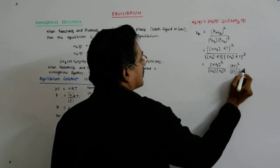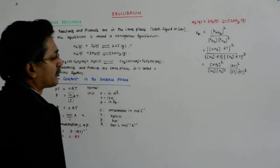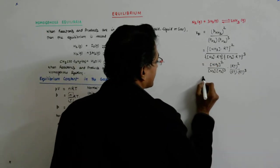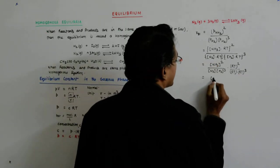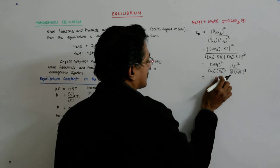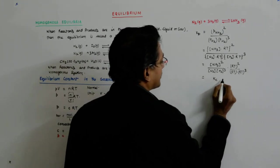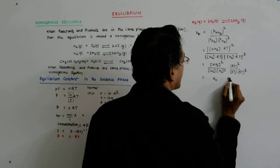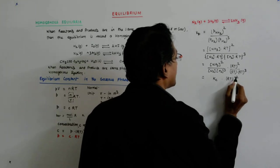RT whole cube, I am sorry. Now this is 4. 2 minus 4 is minus 2. So what is this? This is Kc times RT to the power minus 2.